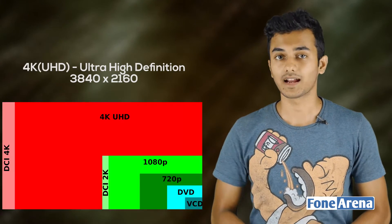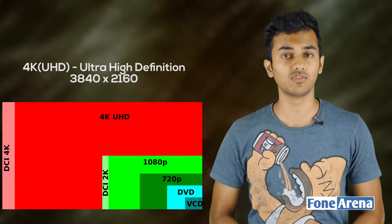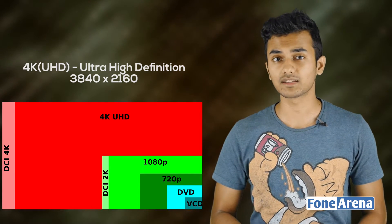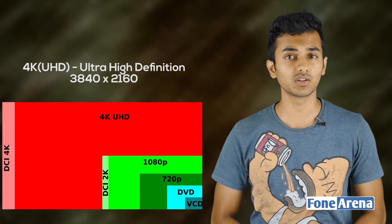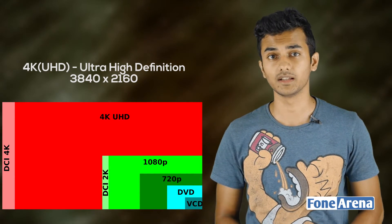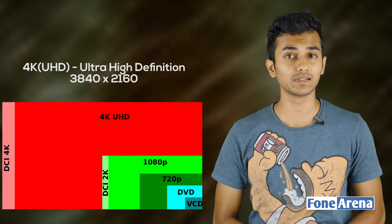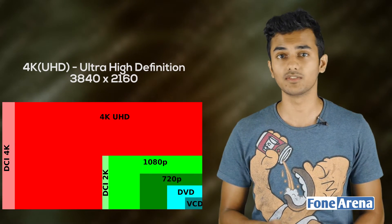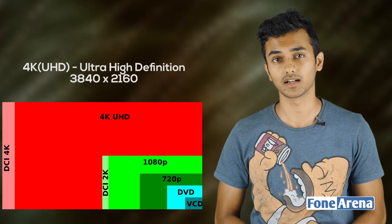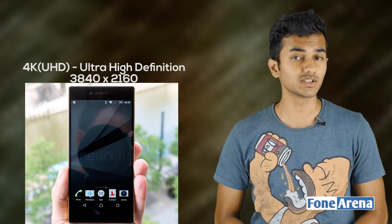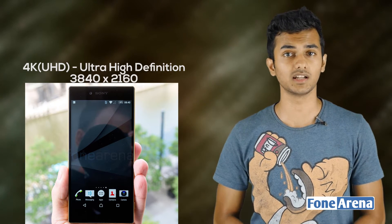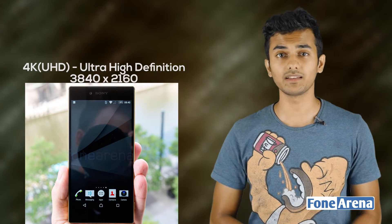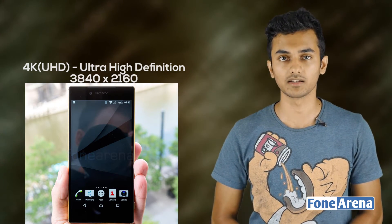Moving on to 4K, its resolution is 3840x2160 pixels. The first smartphone to feature a 4K display was the Sony Xperia Z5 Premium, which offered the best screen resolution available at that time.